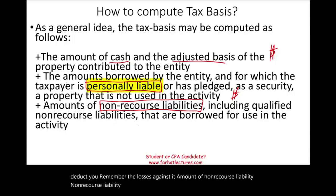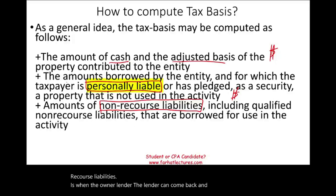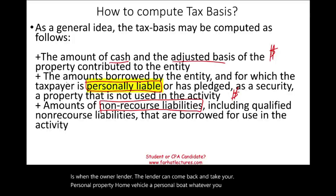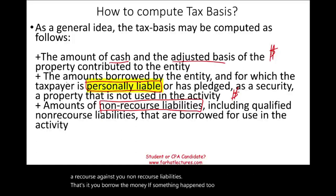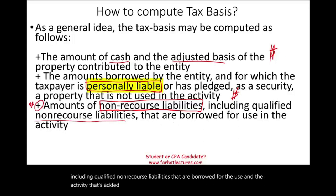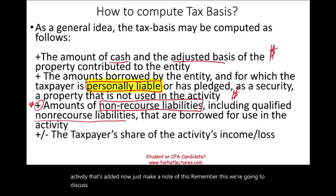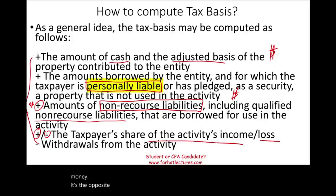Recourse liabilities are when the lender can come back and take your personal property — your home, vehicle, or other personal assets. Non-recourse liabilities mean the lender cannot take anything from you personally if something goes wrong. Any share of the activity's income adds to your basis; any share of the loss reduces your basis; and withdrawals also reduce your basis. You need to know what increases your basis, because your losses are limited to your basis.